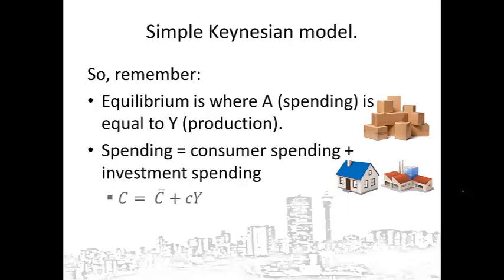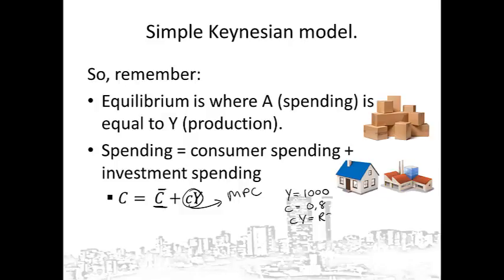Consumer spending can be represented by C equals C-bar plus little c times Y. Remember, consumption spending has an autonomous part — a part that is not influenced by the level of income in the economy, represented by C-bar. Consumption spending also has a part that is influenced by income: this is the induced part, shown by little c times Y. Little c is the marginal propensity to consume, a number between 0 and 1 — for instance, 0.8 — while Y is the level of income. For example, if your income is 1,000 rand and your marginal propensity to consume is 0.8, then your induced consumption will be 800 rand.